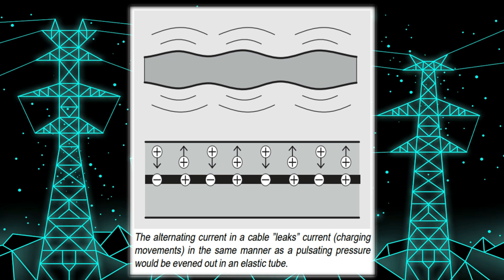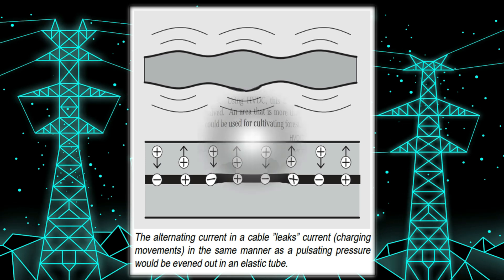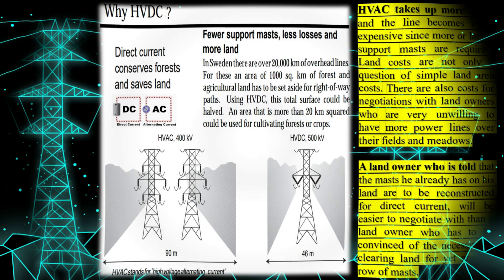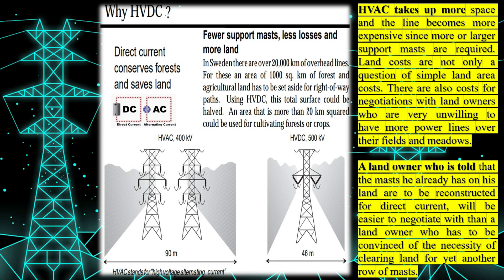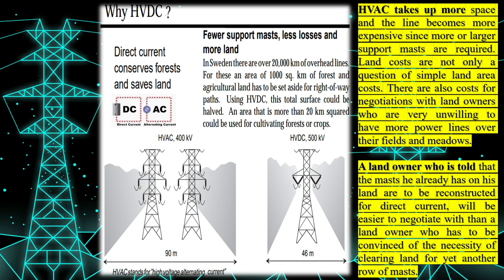High-voltage direct current transmission has several technical advantages over the long-established three-phase alternating current technology. HVDC lines have lower losses than three-phase alternating current lines. The converter station connects an HVDC line to a three-phase alternating current network.